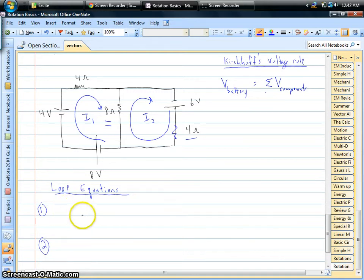So for the left loop, we have the two batteries lined up with each other as we add those together. We get 12 volts. And now on the right-hand side, we have to find the voltage of the resistors. Well, voltage of resistors is found with Ohm's Law, E equals IR. So we have a total of 12 ohms that have current I₁ going through it.